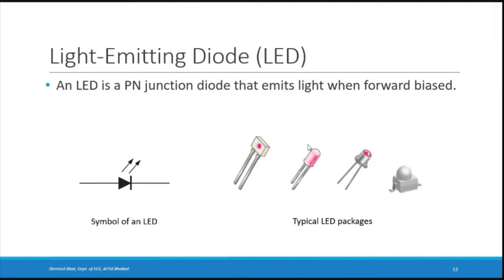Another optical diode is the LED — Light Emitting Diode. This is also a p-n junction diode, but it emits light when forward biased, converting electric energy into light — the opposite of a photo diode. The LED symbol shows arrow marks pointing outward. Packages have a longer terminal (p-side) and a shorter terminal (n-side).